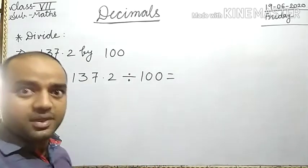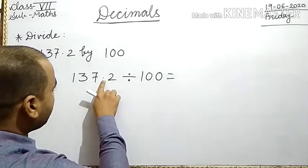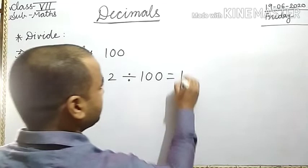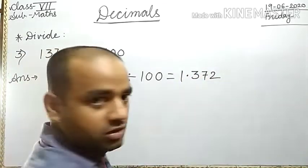For 10, one place; for 100, two places. Shifting the decimal point to the left by two places means 1.372. Is it clear?